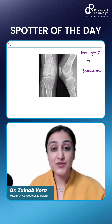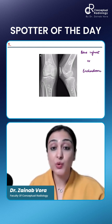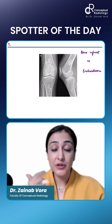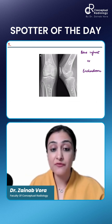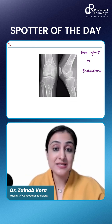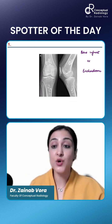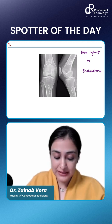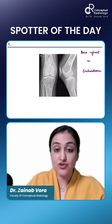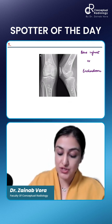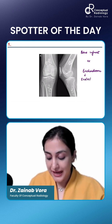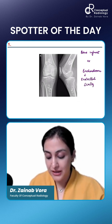Enchondroma, as you know, is a tumor, whereas bone infarcts are within the medullary cavity. The first thing you have to see is a mass-like morphology — endosteal scalloping. If you see scalloping margins, then you start thinking of enchondroma. Endosteal scalloping favors enchondroma.